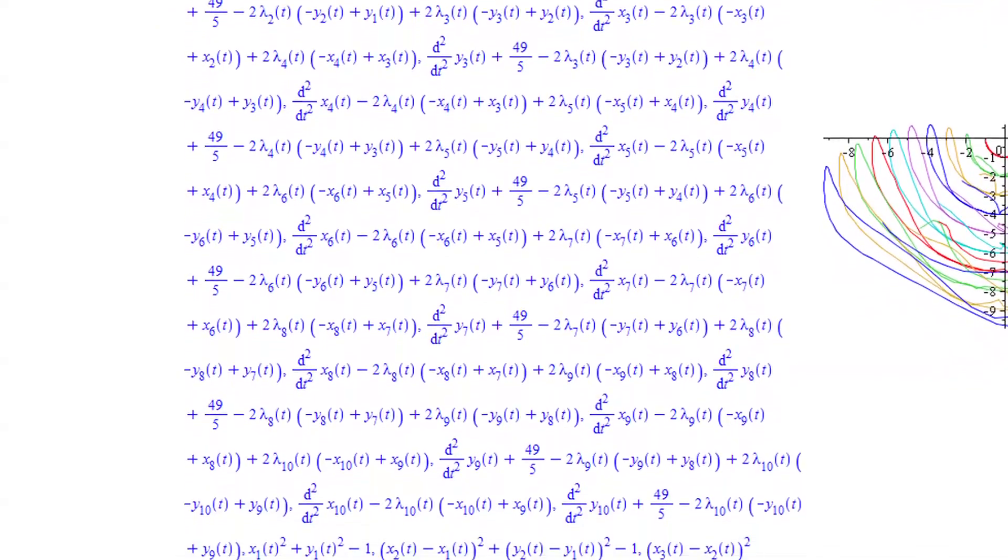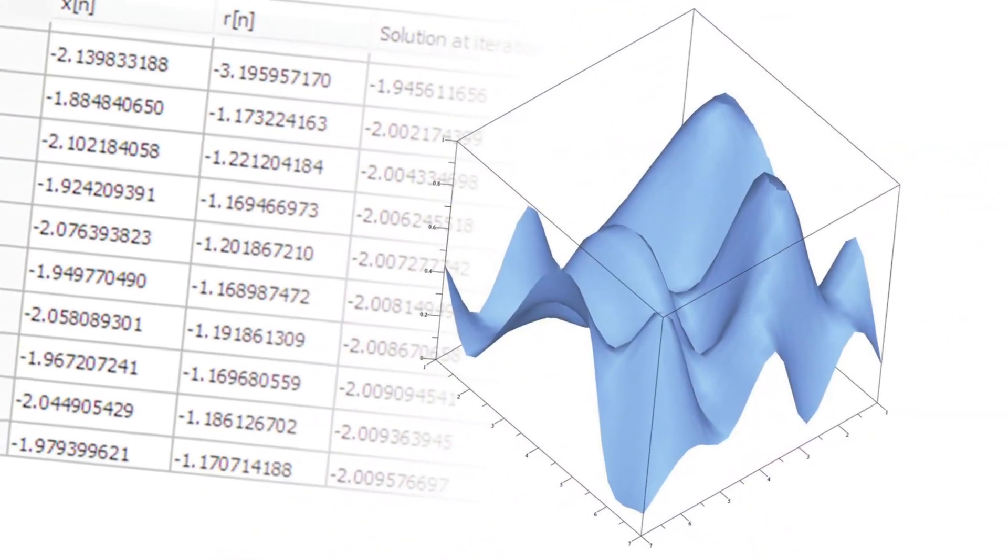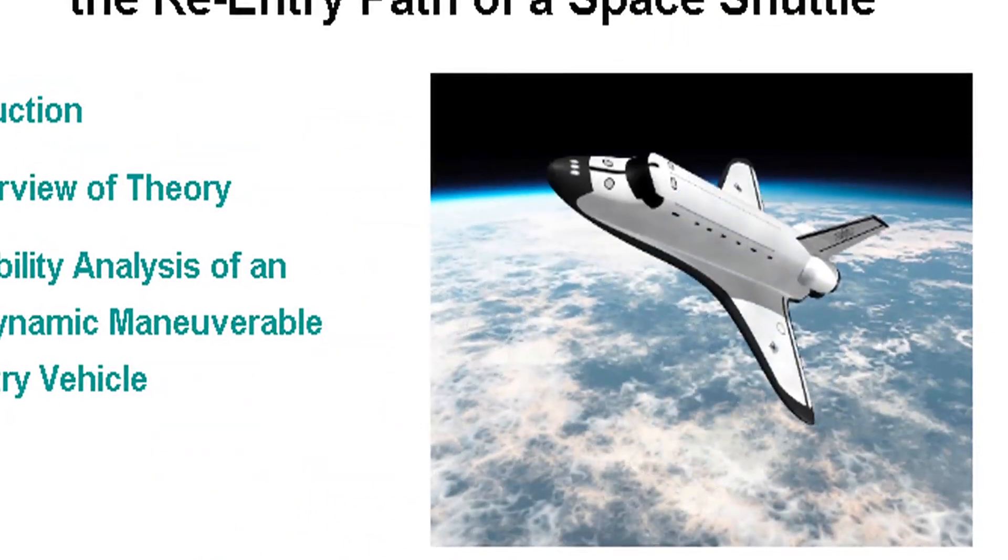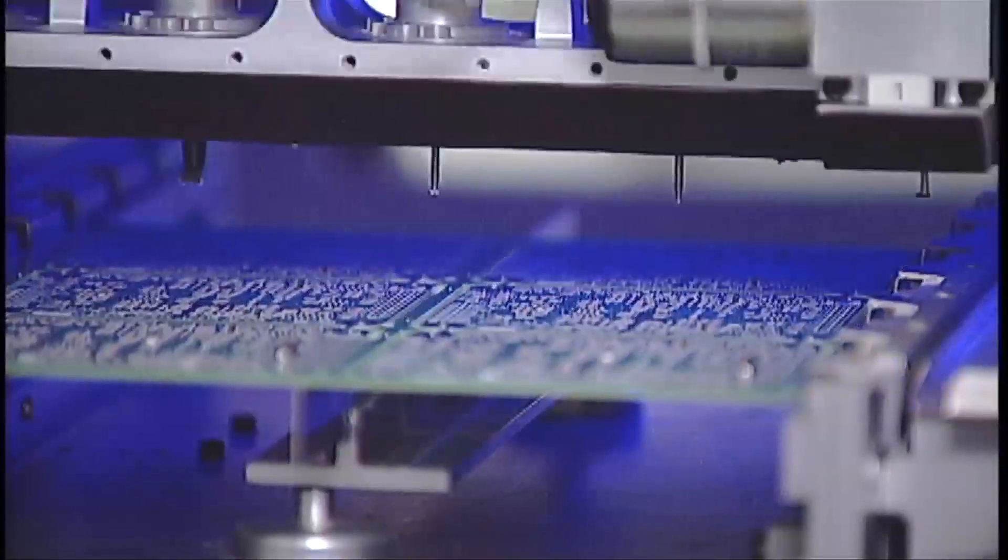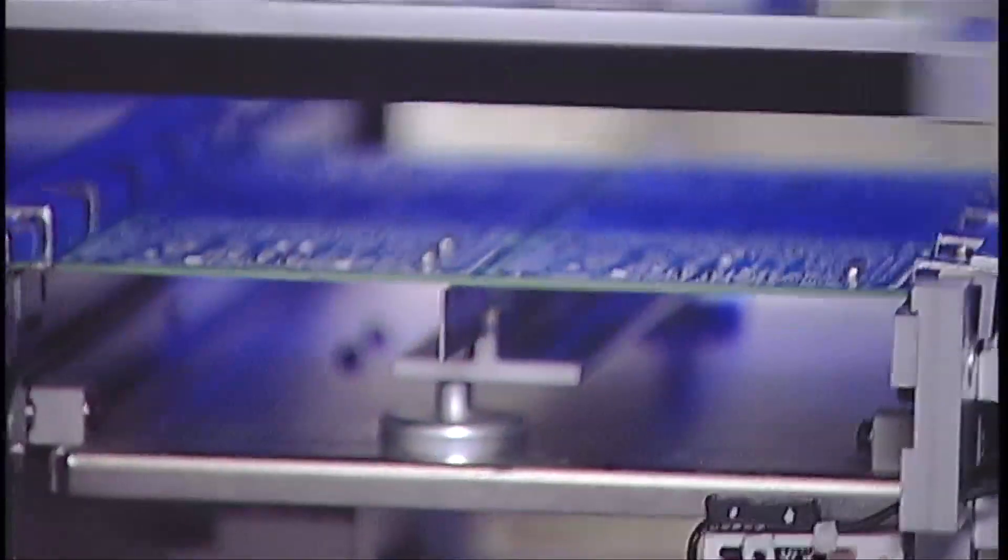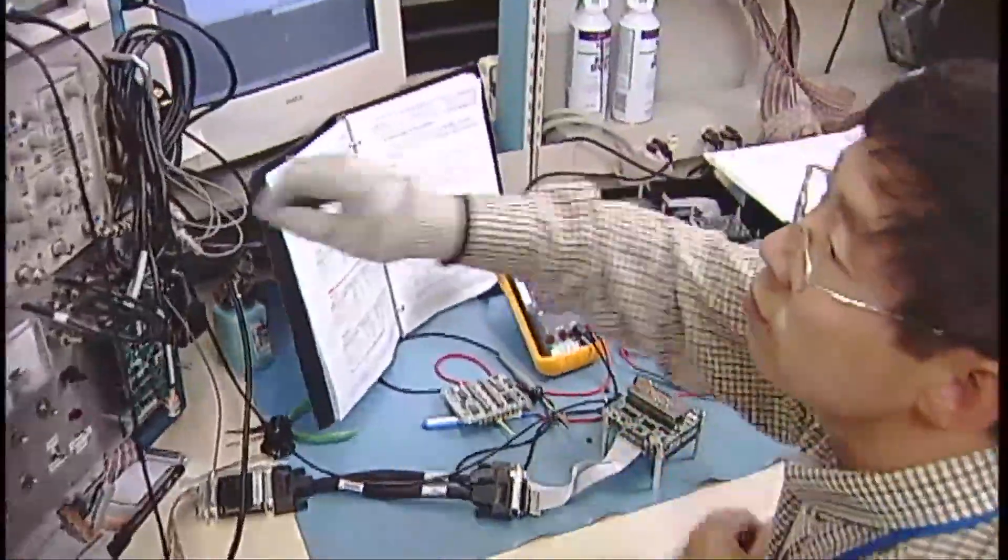Maple started as a research project in the 1980s. Initially, the focus was very much on symbolic computing and its use in education. Maple today incorporates both symbolics and numerics and integrates them very tightly. With that, the range of applications has grown tremendously. Maple today is still very much used in math education, but it's also used in industry.